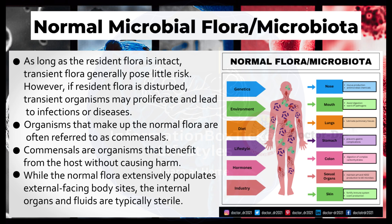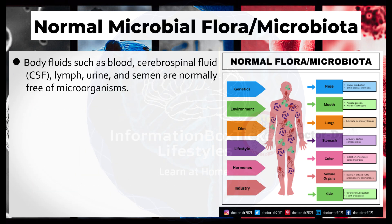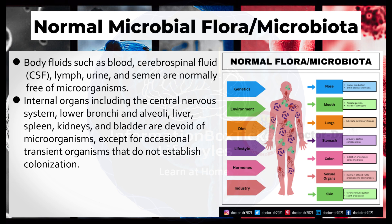While the normal flora extensively populates external-facing body sites, the internal organs and fluids are typically sterile. Body fluids such as blood, cerebrospinal fluid, lymph, urine, and semen are normally free of microorganisms. Internal organs including the central nervous system, lower bronchi and alveoli, liver, spleen, kidneys, and bladder are devoid of microorganisms except for occasional transient organisms that do not establish colonization.